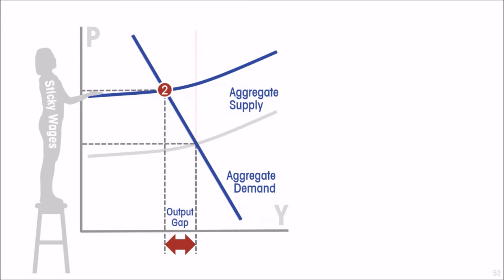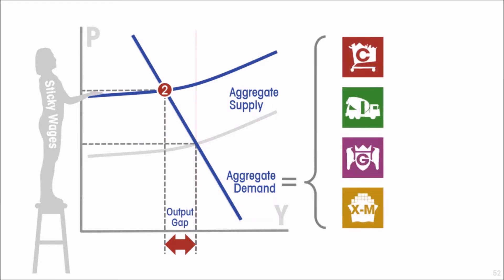It can also create political problems for a government, so there's a temptation to use policy to solve the problem. There are ways that governments can intervene. It can use fiscal policy — fiscal policy can be used by cutting taxes, which leaves households with more disposable income and that's going to push up their consumption spending. The government can also increase its own spending, its own demand for the economy's goods and services, and in that way the government can try to increase aggregate demand.